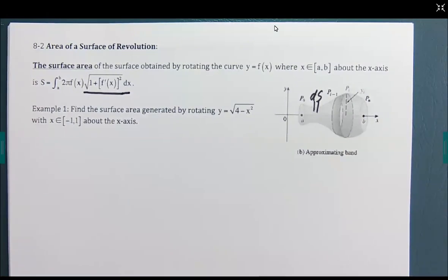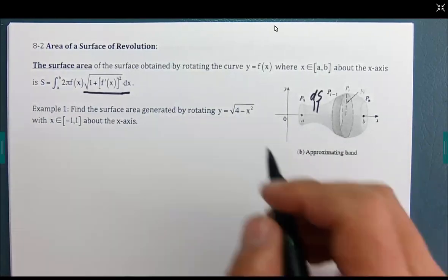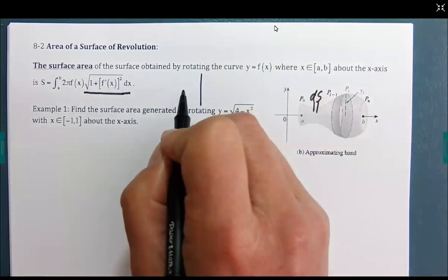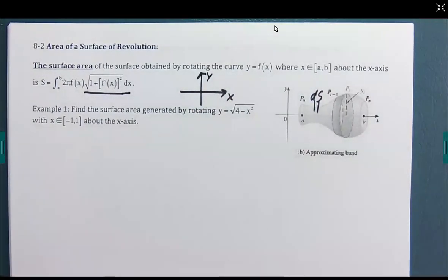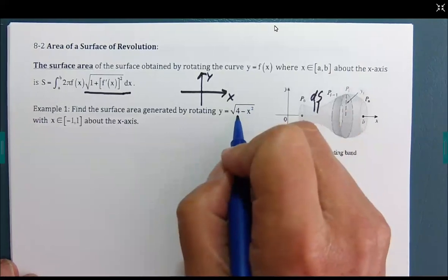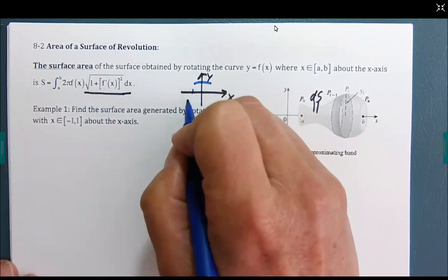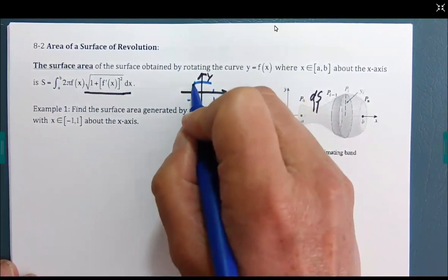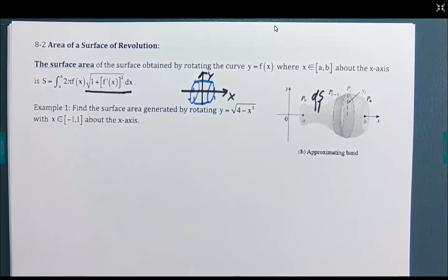Let's just jump into it. Find the surface area generated by rotating y equals √(4-x²), where x goes from -1 to 1 around the x-axis. So, this is actually a circle, part of a circle. And it's going from where y is positive.